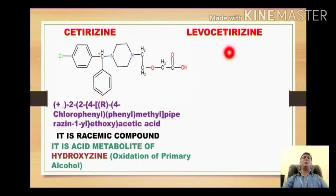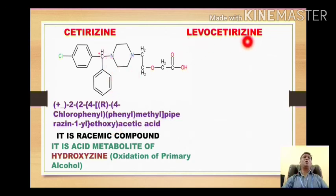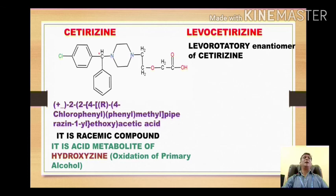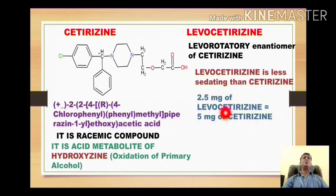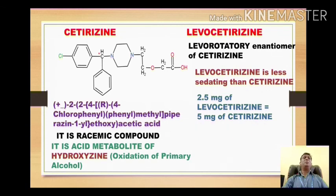The next compound is levocetirizine. It is nothing but the levo-isomer, that is the negative isomer, of cetirizine. When cetirizine undergoes racemic modification, it results into the dextro and the levo isomers. So the levo isomer of cetirizine is called levocetirizine. This compound is found to be less sedating than cetirizine, and only 2.5 mg of levocetirizine may produce an action equivalent to 5 mg of cetirizine.